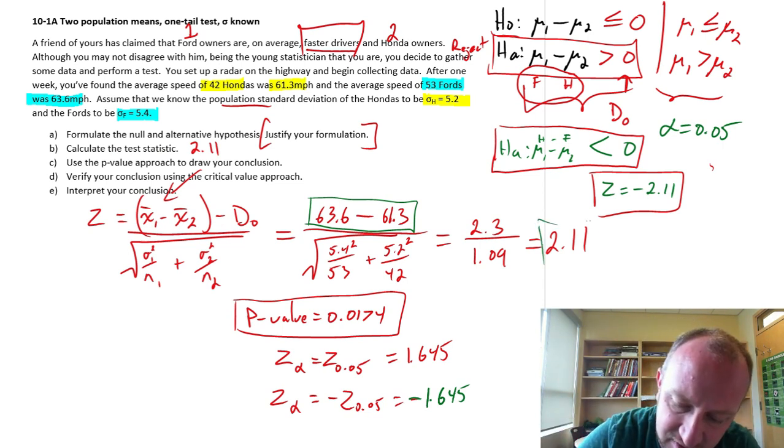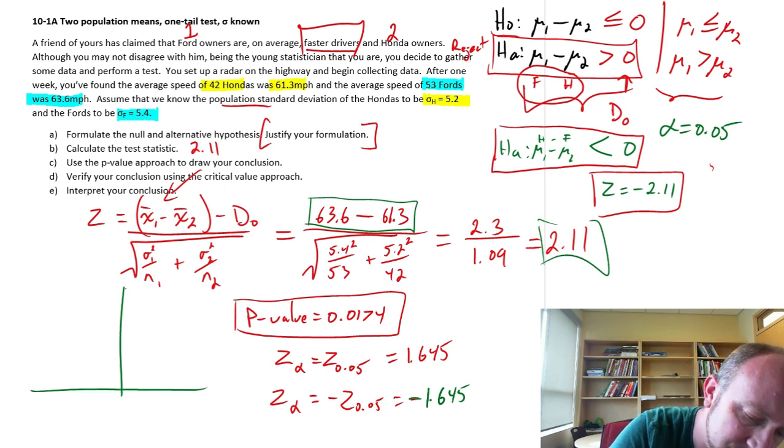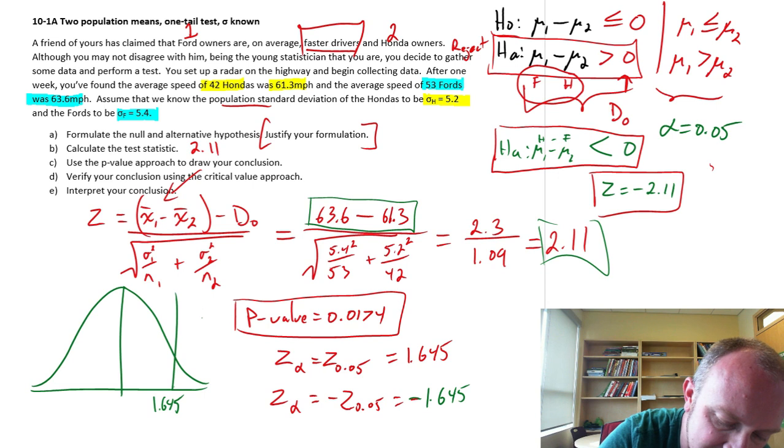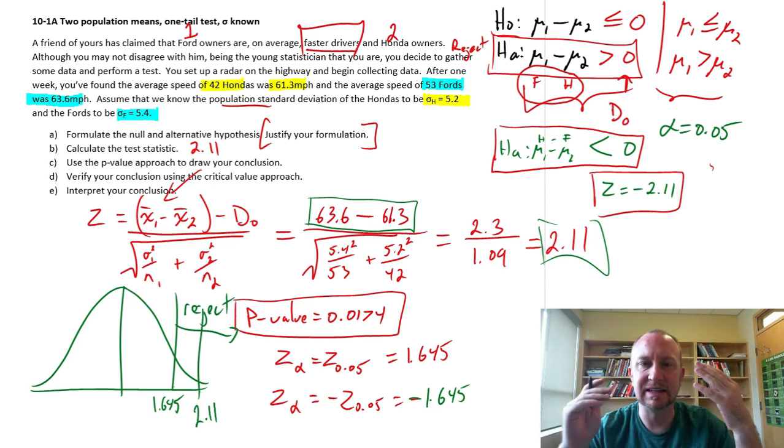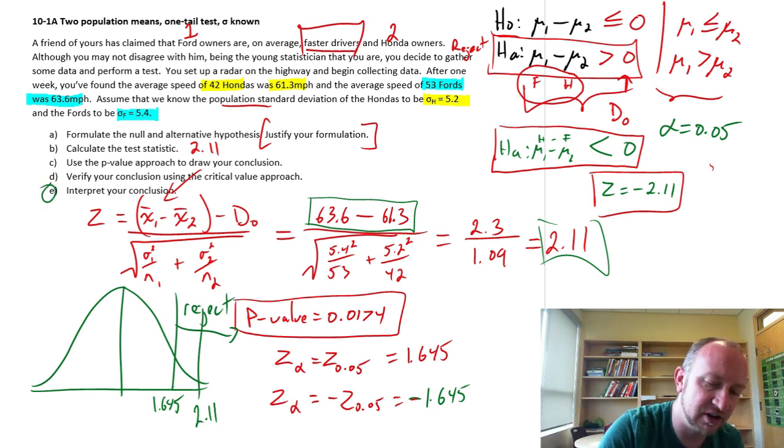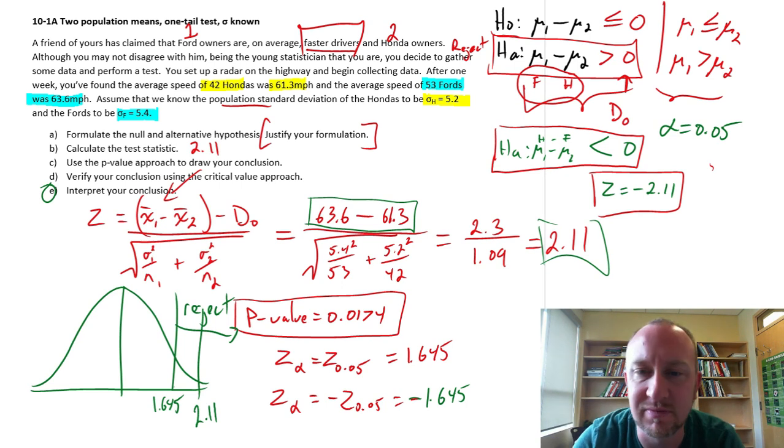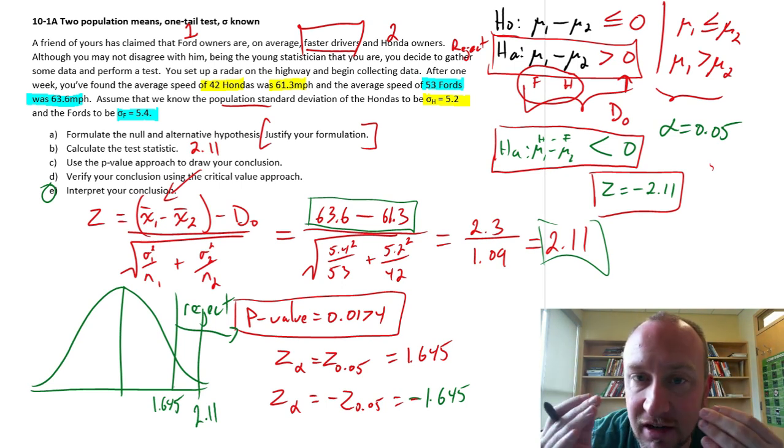We have a test statistic of 2.1 in our distribution. That critical value is here, 1.645. And my test statistic is somewhere out here, 2.11. So that is in our rejection space. So once again, coming back to E, I think I've already answered E, but just for completeness, we definitely have sufficient evidence to reject our null hypotheses.